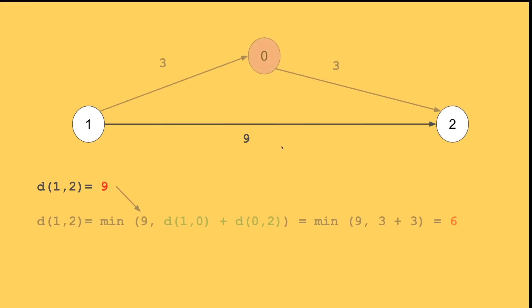Now if I tell you there's one intermediate node you can use, you can go from 1 to 0 and then from 0 to 2. You can update the shortest distance between 1 and 2 to the minimum of 9 and the value of going 1→0 plus 0→2. That's 3 plus 3, so the minimum of 9 and 6 is 6.